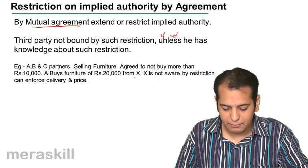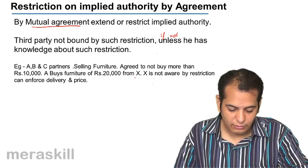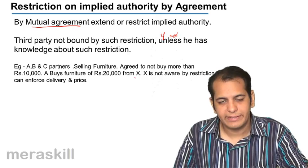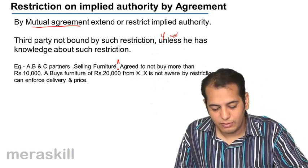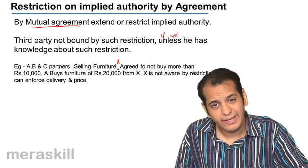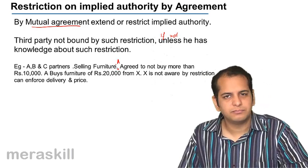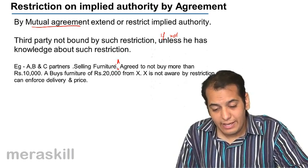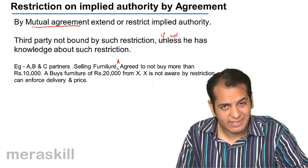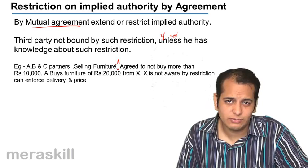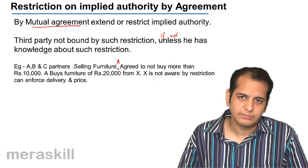For example, A, B and C are partners selling furniture. A agreed not to buy furniture of more than ₹10,000, but then he buys furniture of ₹20,000 from X. X is not aware of this restriction, so X can always claim it from the firm. But if X knows that A does not have the right to buy furniture of more than ₹10,000, and yet supplies him with furniture of ₹20,000, then X cannot claim it from the firm — because X already has knowledge of this fact.